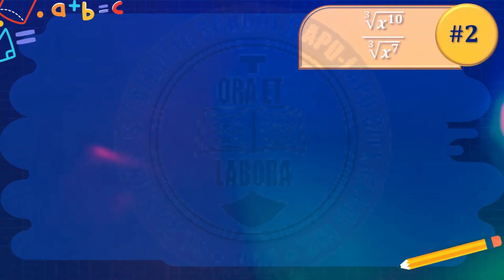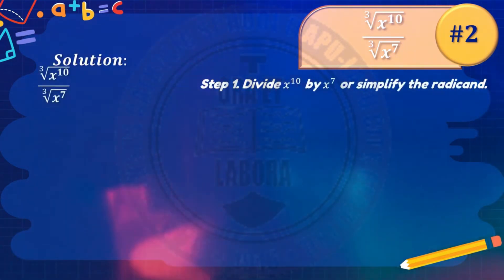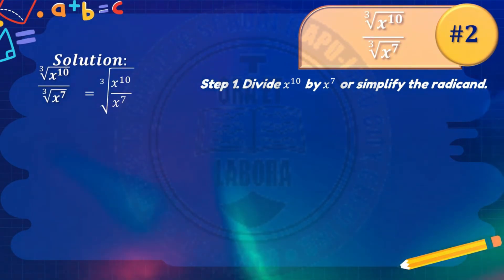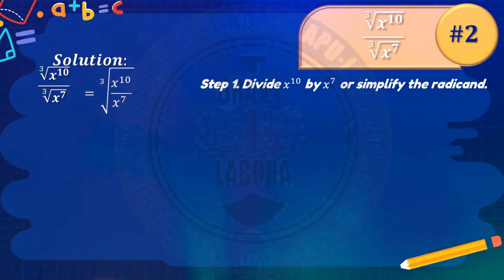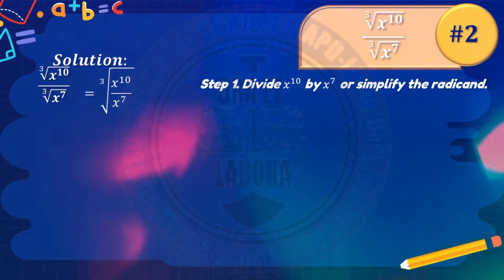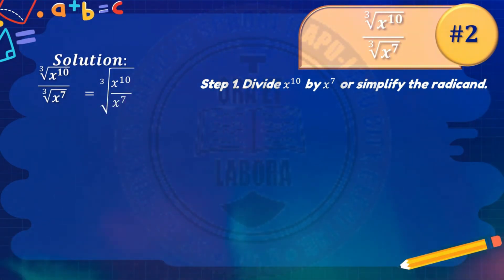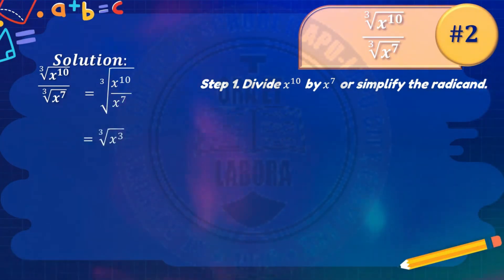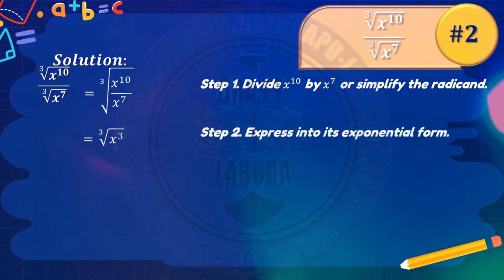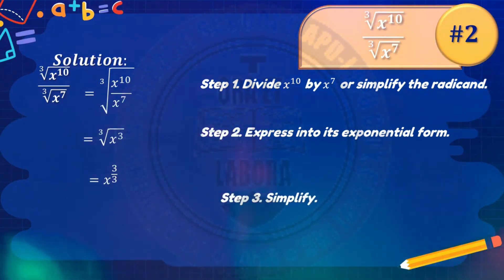Number 2: the cube root of x raised to 10 over the cube root of x raised to 7. Since we can divide the radicands, place both under the same cube root: the cube root of x raised to 10 over x raised to 7. Applying the laws of exponents, x raised to 10 divided by x raised to 7 is x cubed. So we have the cube root of x cubed. Express in exponential form: x raised to 3 over 3, which simplifies to x raised to 1, or simply x. The final answer is x.